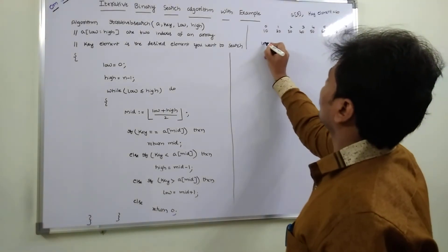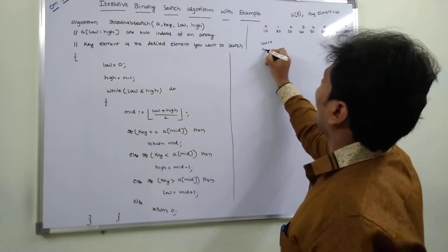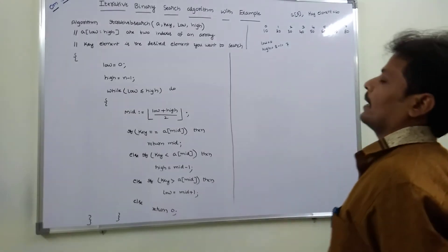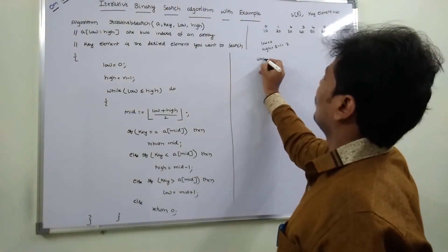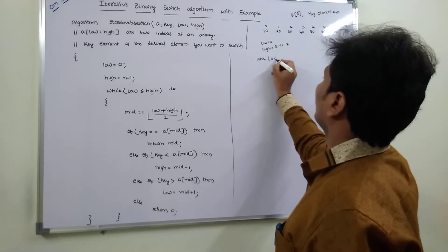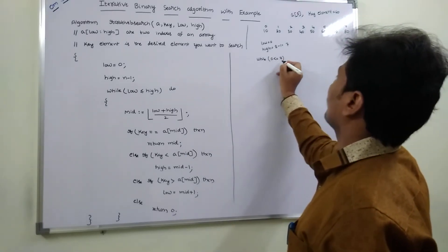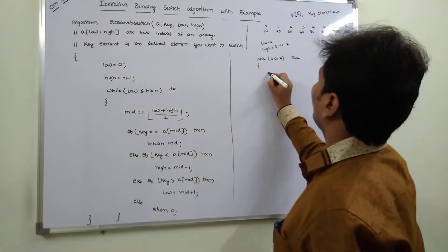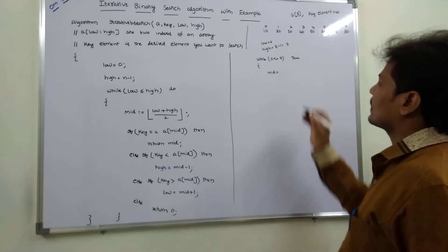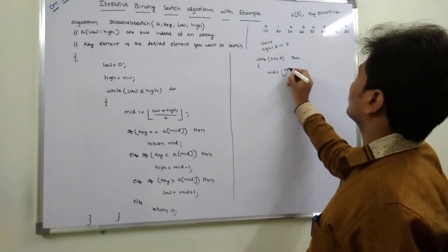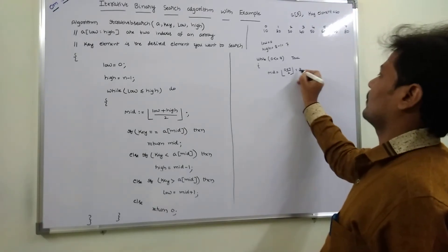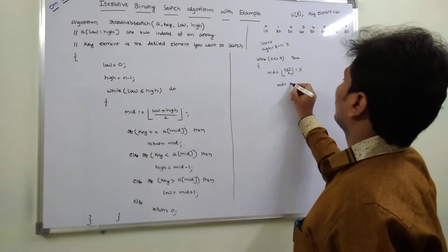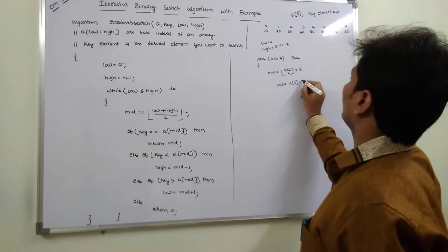Low is equal to 0 and high is equal to n minus 1, that is 8 minus 1 = 7. While low (0) is less than or equal to high (7) — true. We find mid = (low + high) / 2 = (0 + 7) / 2 = 3. So mid value is A[3], which equals 40.